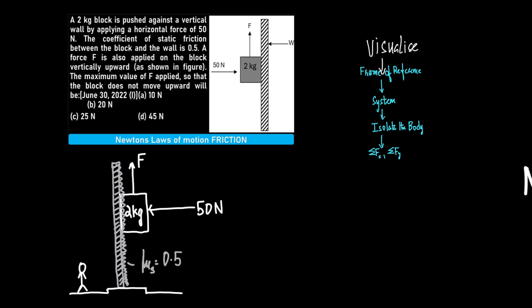We will choose this flowchart to solve the problem. First we visualize the situation. We will use an inertial frame of reference, using a man outside the system who is at rest. We identify the system which is the block and wall system, then isolate the body which is the block, then proceed with sigma fx and sigma fy.